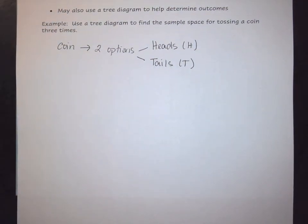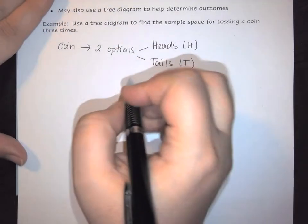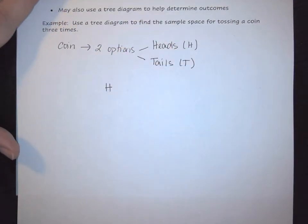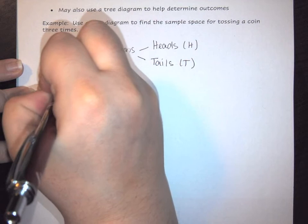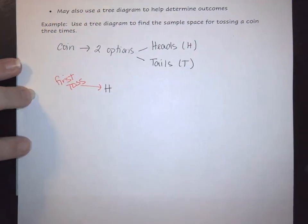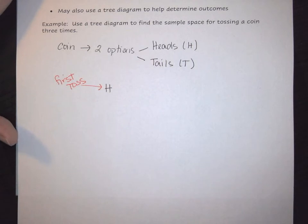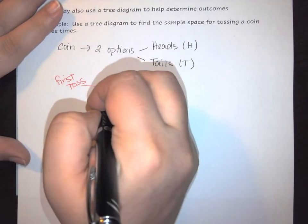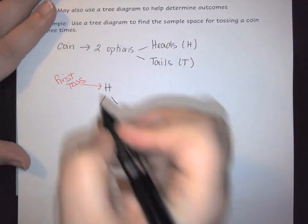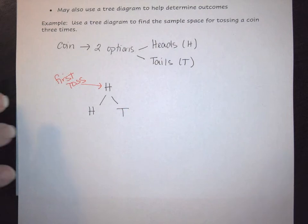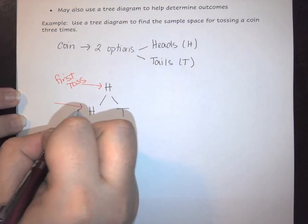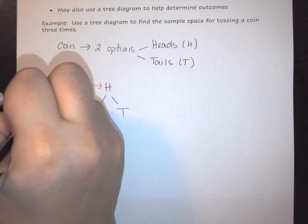I'll start the sample space by considering the first toss. If the first toss is heads, that represents my first toss. Then, on my second toss, I have two options: it could be heads or tails. This second stage represents the second toss.